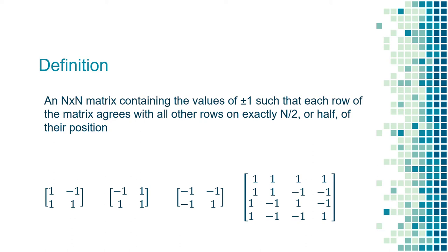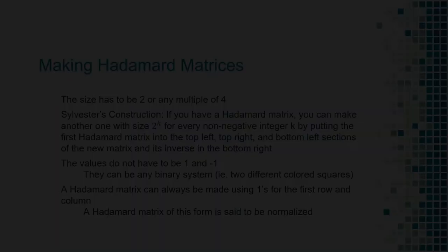Now, be careful here. We can only compare the first row with all other rows. We also have to compare the second row with the third row, the second with the fourth, and the third with the fourth. Only if all of these comparisons say that half of the values agree with each other, can we then say that this is indeed a Hadamard matrix.